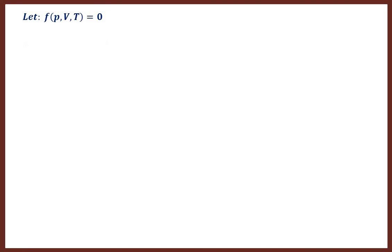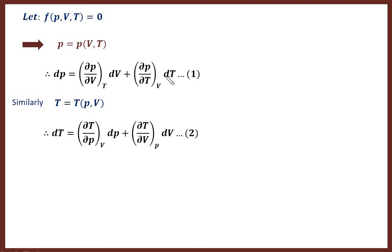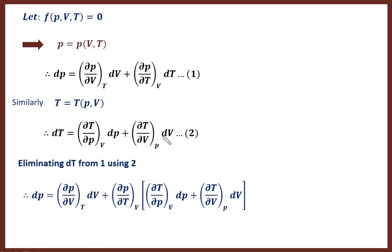We can write p as a function of v and t. Then dp equals (∂P/∂V) at constant T times dV, plus (∂P/∂T) at constant v times dT. Similarly, we can write temperature as a function of pressure and volume. Therefore dT equals (∂T/∂P) at constant v times dP, plus (∂T/∂V) at constant p times dV.